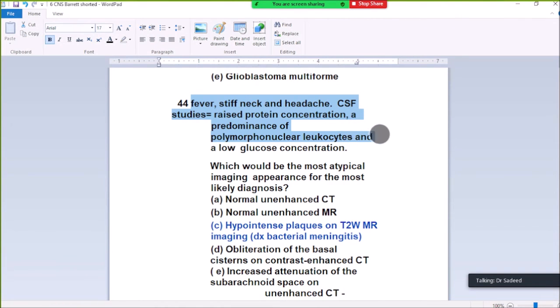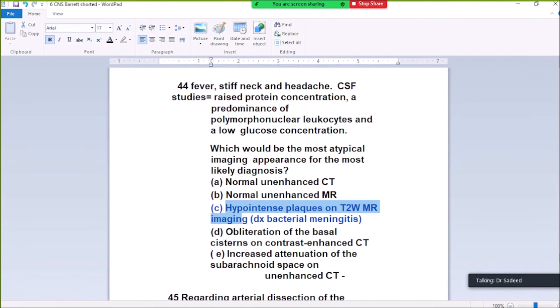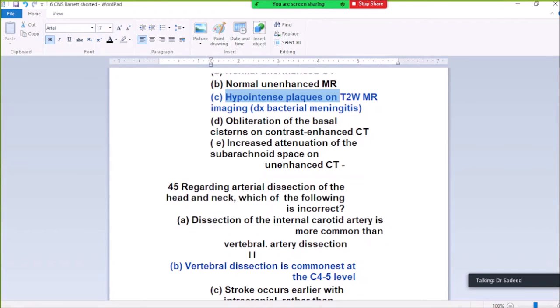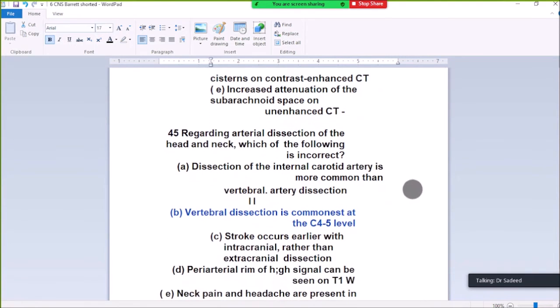Question 44. Patient presents with stiff neck, headache, increased protein, predominance of polymorphonuclear leukocytes, and low glucose concentration. These findings of stiff neck, headache, increased protein, and decreased glucose indicate bacterial meningitis. Question 45. Regarding arterial dissection of the head and neck, which is correct? Vertebral dissection is common at the C4-C5 level. This is wrong. Vertebral dissection is not common at C4-C5 level; this is incorrect.